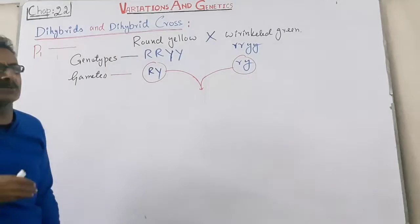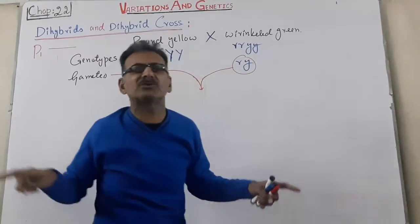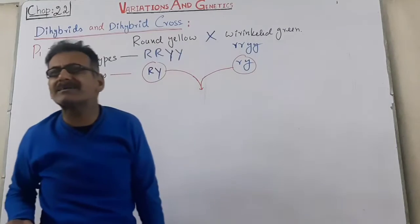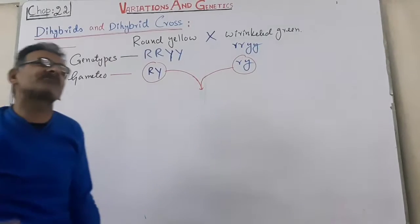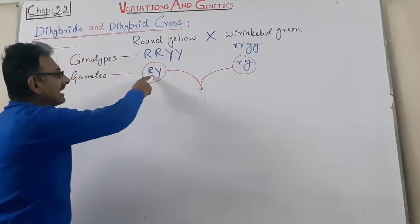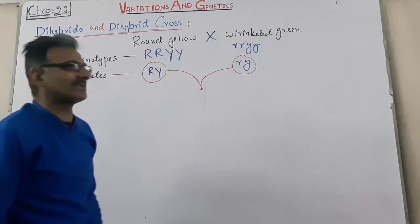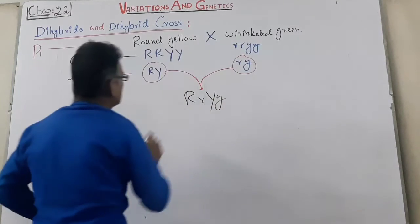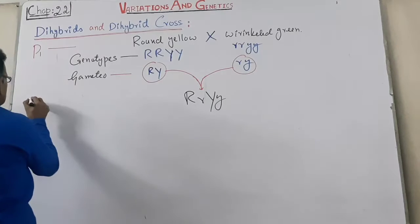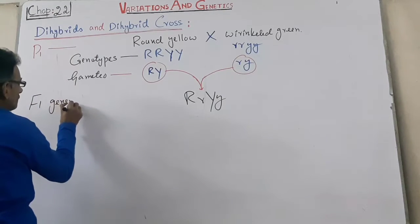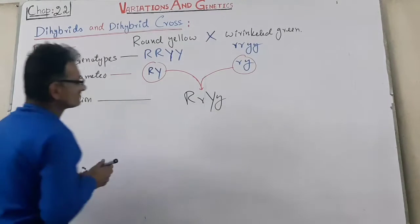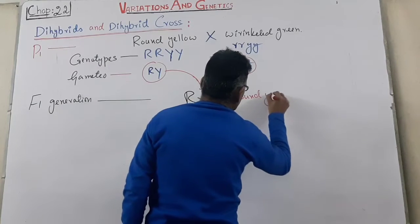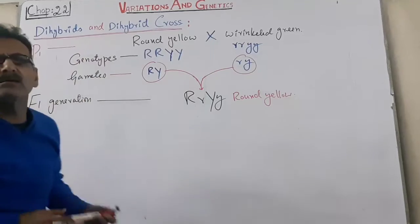During fertilization the male gamete and female gamete unite together. We have taken the round yellow seeded plant as male and wrinkled green seed plant as female. These are the male gametes and these are the female gametes. When they unite in the first generation, we get capital R small r capital Y small y — this is the F1 generation, which is round yellow.